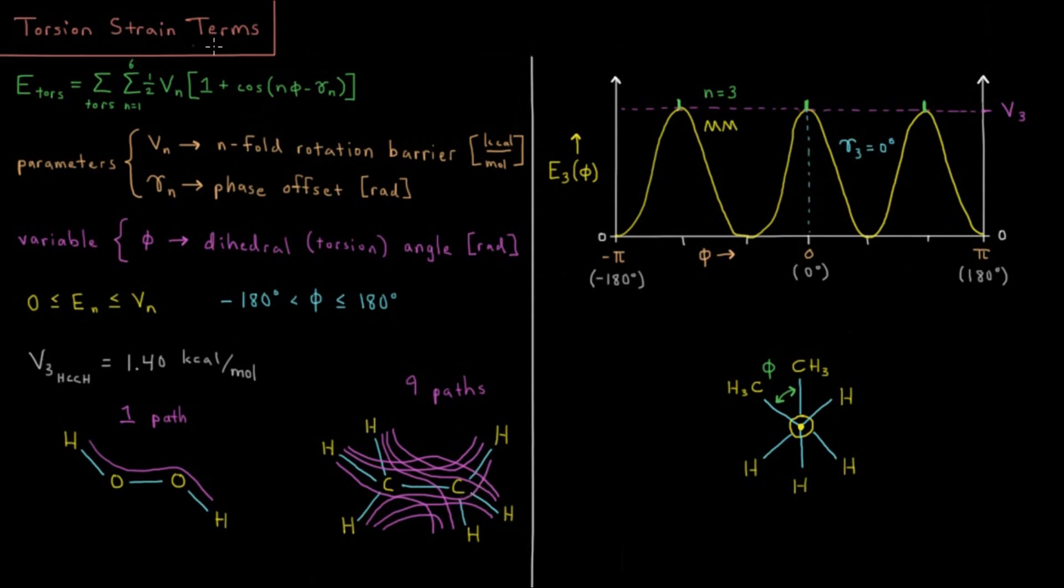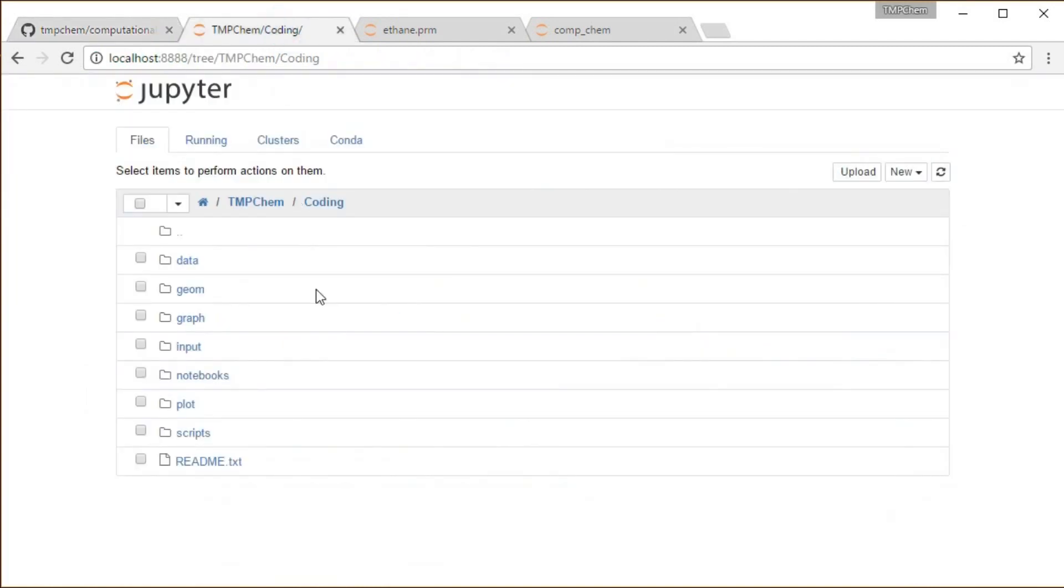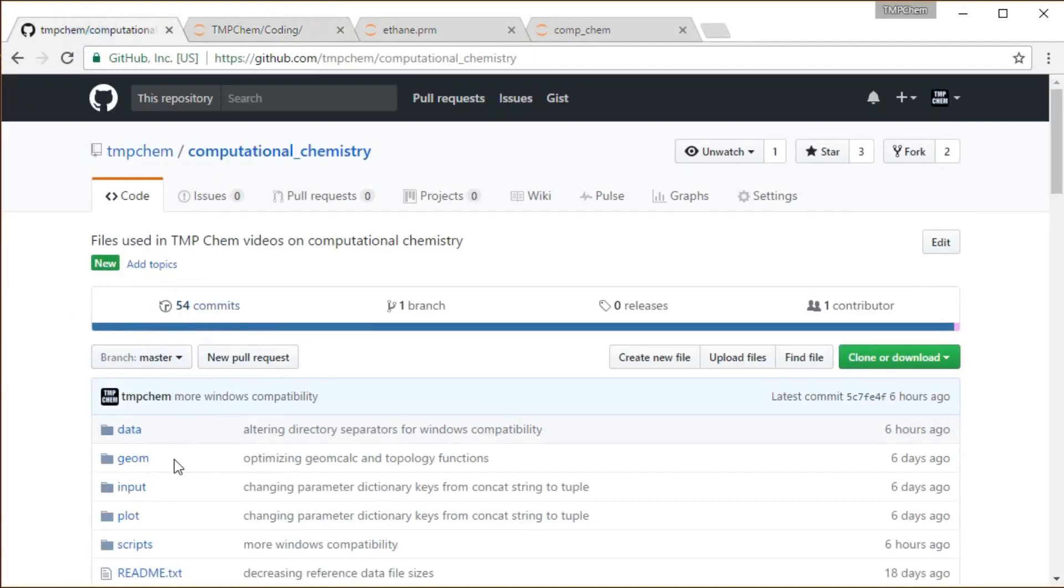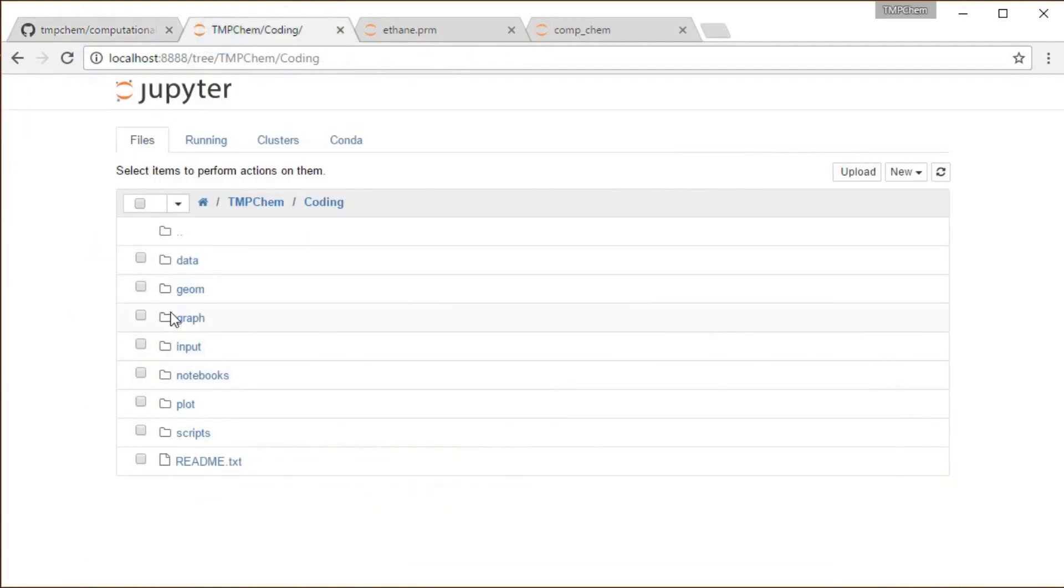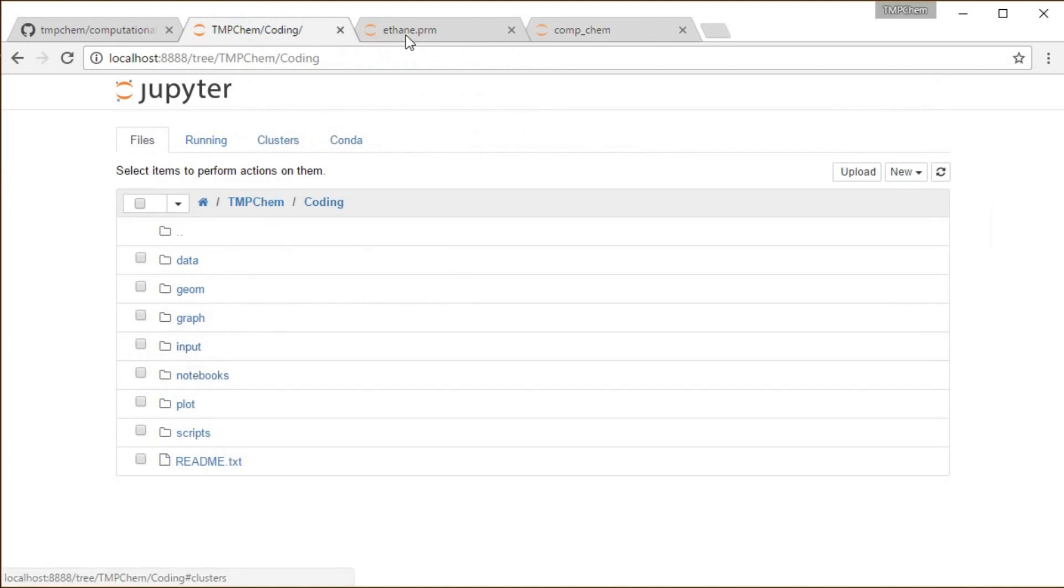All right. So those are our torsion terms. So let's take a look at this in practice for some computation, looking from my GitHub computational chemistry repository, as always running a Jupyter notebook on those directories. I'm going to be running a notebook that's one level down from the top here in the notebooks directory.